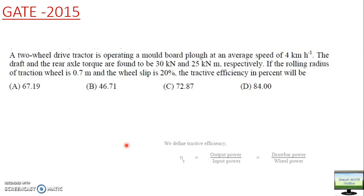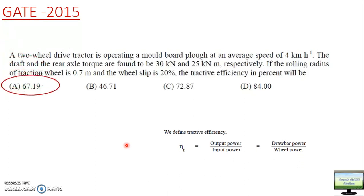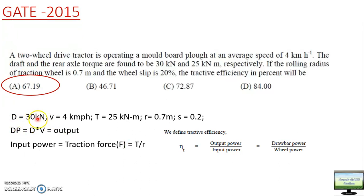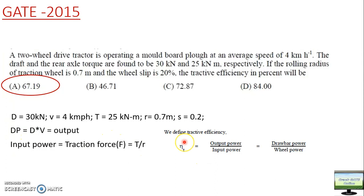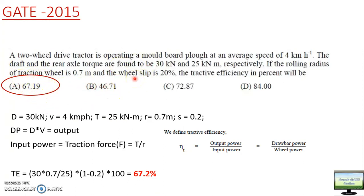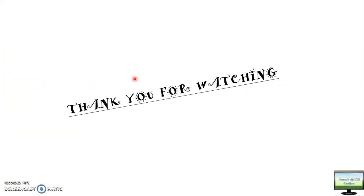In GATE 2015 they asked another tractive efficiency question with draft of 30 kilonewtons and speed of 4 km/h. Output is drawbar power (draft × speed) and input power comes from traction force (torque ÷ rolling radius) multiplied by speed. In the ratio, speed cancels out, so tractive efficiency equals draft divided by torque divided by rolling radius - giving option A as the answer.